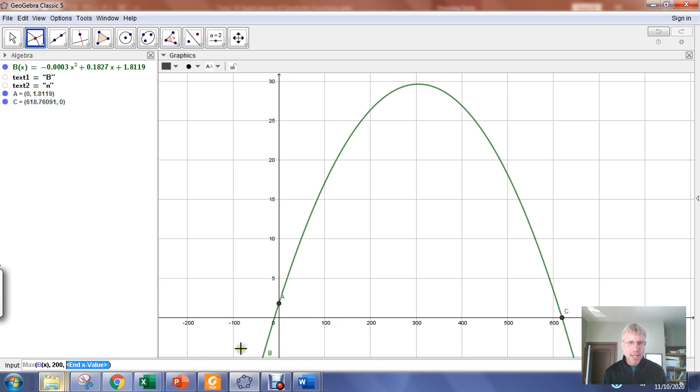And tab brings me over to end X value. And what I need to do for end X value is input an X value or nitrogen value that is passed or to the right of the vertex. And I see that 400 is to the right of the vertex. So I'm going to go 400. So again, you give it a start value and an end value on an interval over which the vertex value is contained.